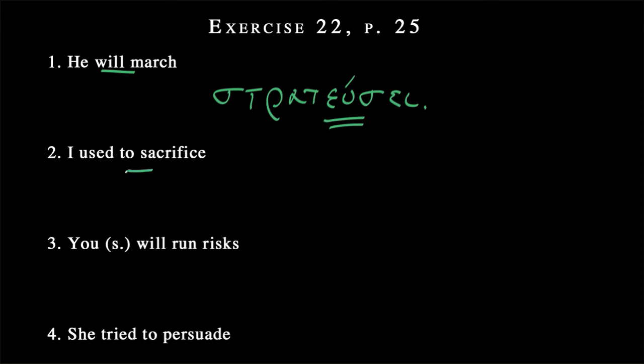I used to sacrifice. Sacrifice coming from thuō, and then used to. This is a clear sign of the imperfect. So remember the imperfect comes from the first principal part, so we're going to have that stem, theu, and then we're going to want to build off of it with the past indicative augment, and then the first person singular ending, which is on. Ethuon. And again, short, so we go back to the anti-penult, ethuon.